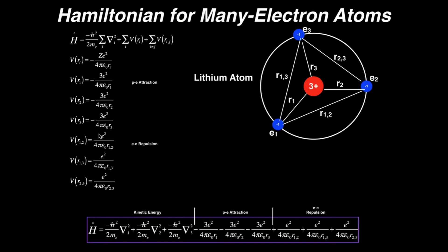Now we have to deal with the repulsions. They're all positive, but there's no z term because the repulsions don't depend on the nucleus — they're between two electrons, each with a fundamental charge of 1. The repulsion between electrons 1 and 2 separated by distance r12 is e squared over 4 pi epsilon zero r12. Between electrons 1 and 3 separated by r13, it's e squared over 4 pi epsilon zero r13. Finally, between electrons 2 and 3 separated by r23, the repulsion is e squared divided by 4 pi epsilon zero r23.